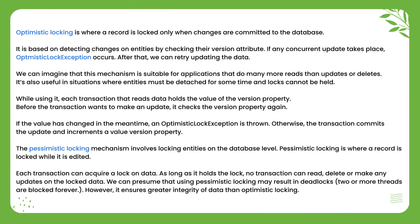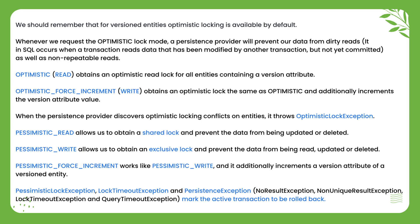Optimistic locking is where a record is locked only when changes are committed to the database. If any concurrent update takes place, an optimistic lock exception occurs. The pessimistic locking mechanism involves locking entities on the database level. Pessimistic locking is where a record is locked while it is edited. We should remember that for versioned entities, optimistic locking is available by default.